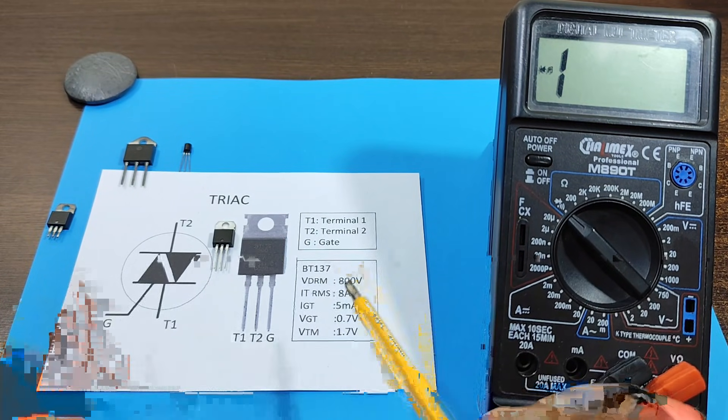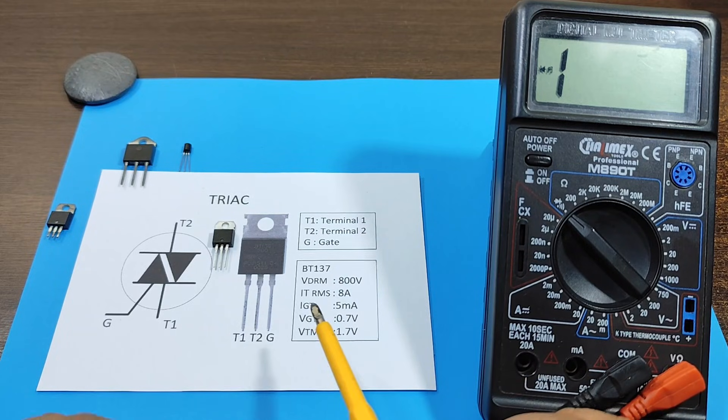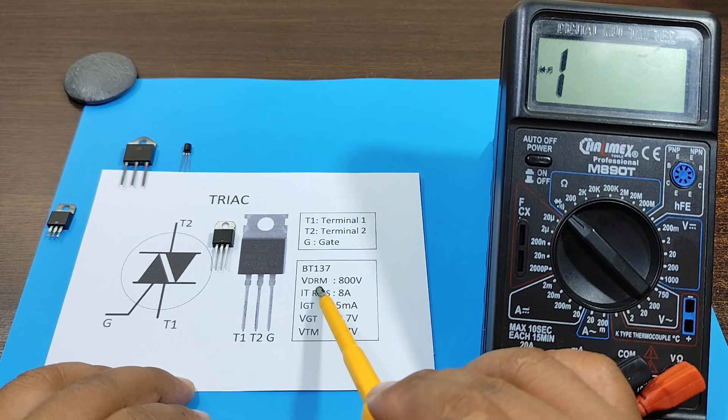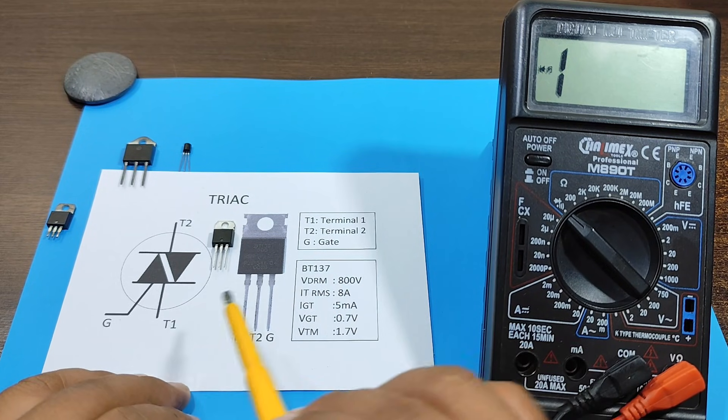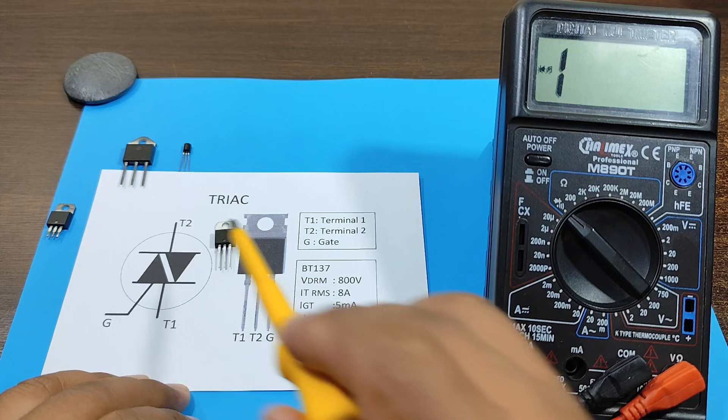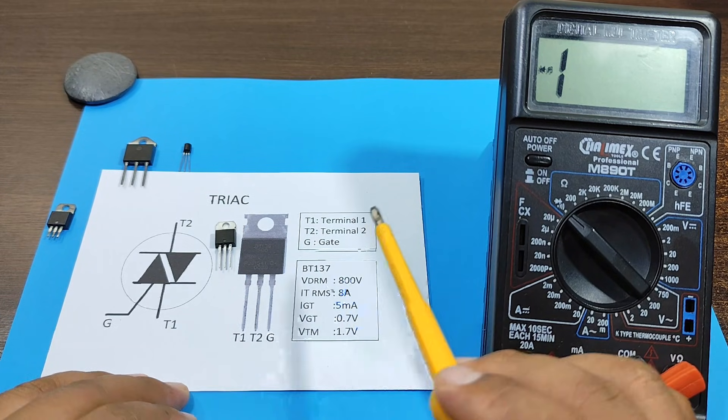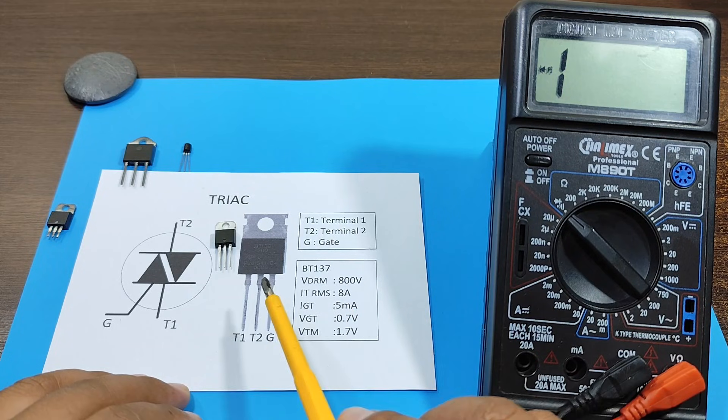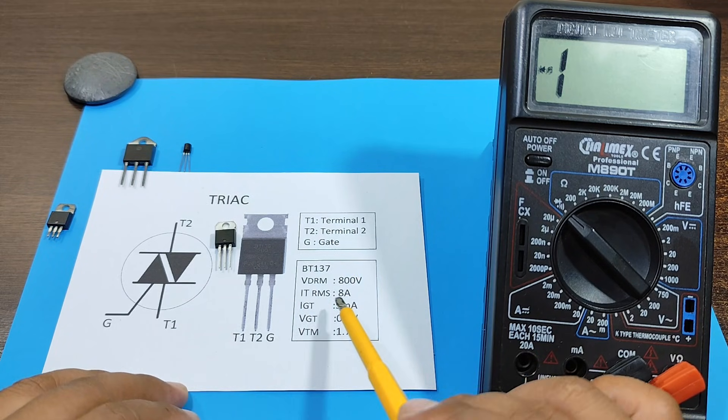Now, regarding the characteristics to consider, these would be the ones here. The voltage that your triac can withstand between T1 and T2. The higher the voltage, the better. Then we have the current that your triac can handle. That will depend a lot on what you want to control.